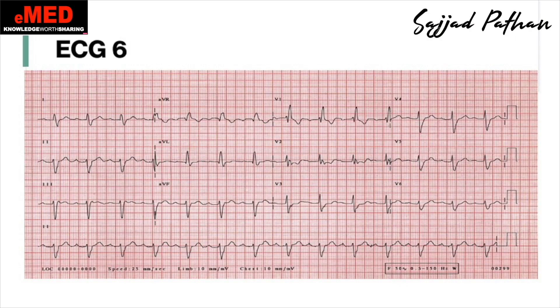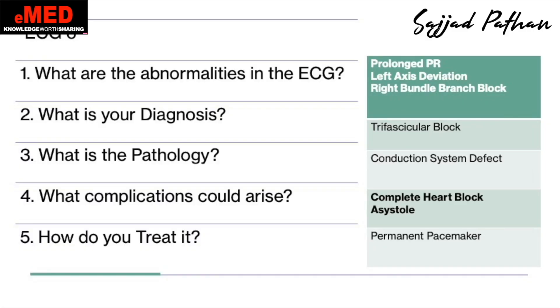Let's look at ECG number six. You see a prolonged PR interval — that is your first-degree heart block — with right bundle branch block and left axis deviation. The diagnosis is trifascicular block. The pathology is a conducting system defect. The complication could be complete heart block. Treatment: these patients need a permanent pacemaker implanted. Compare this to WPW: the only difference was a short PR interval versus a wide PR interval — be careful in the exam.